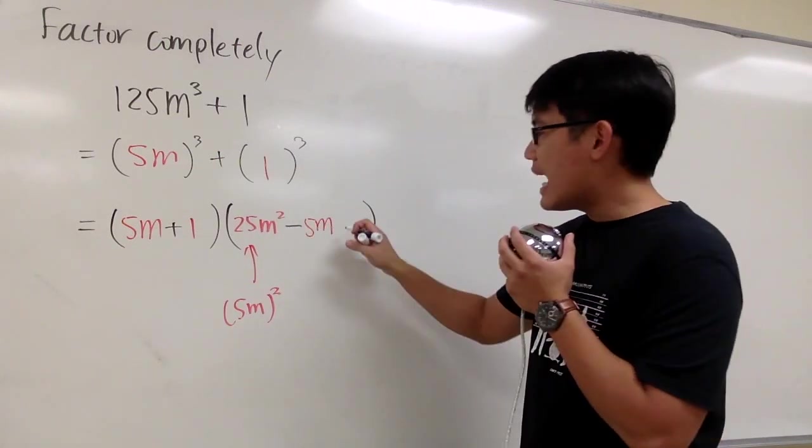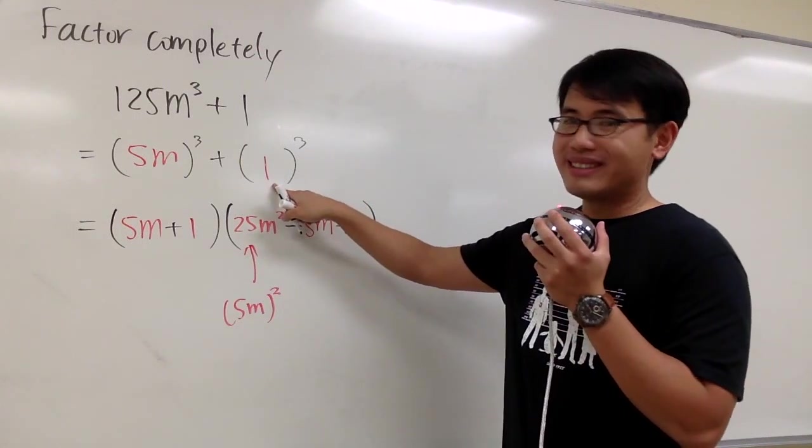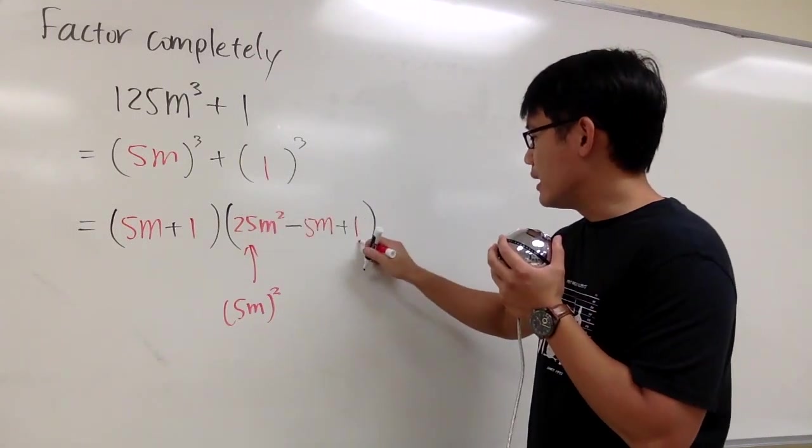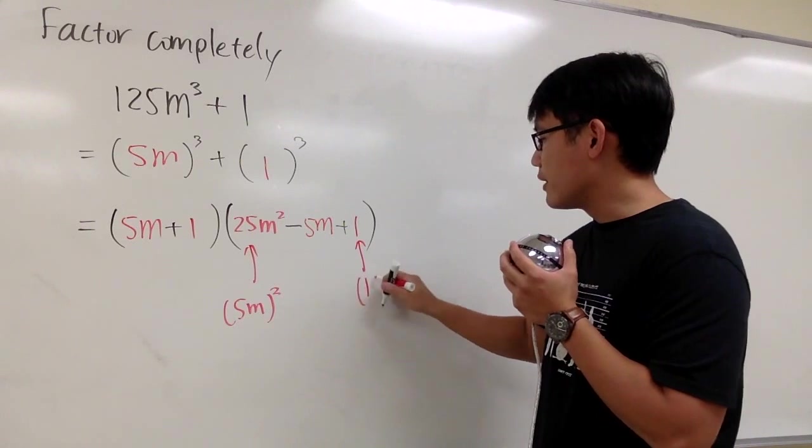At the end, we add 1 squared, the b squared, so it's just 1. Let me write this down, it's because we have the 1 squared.